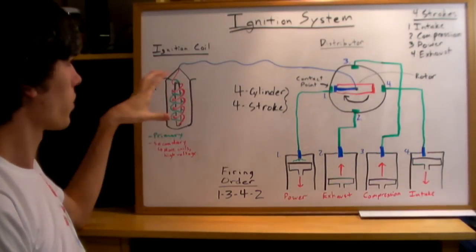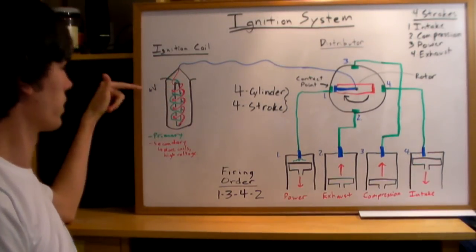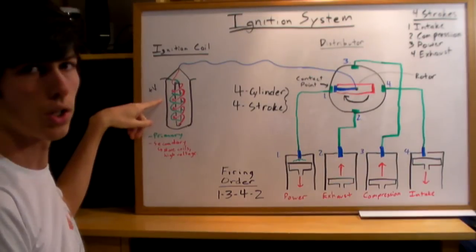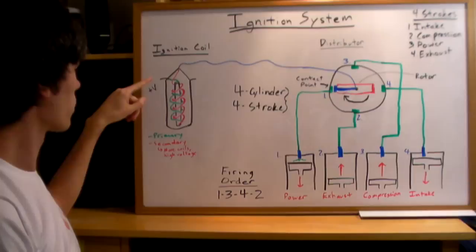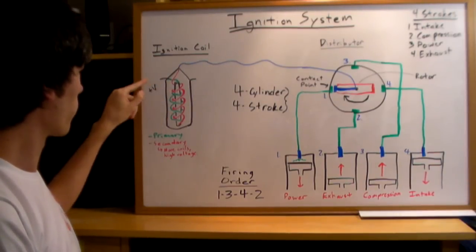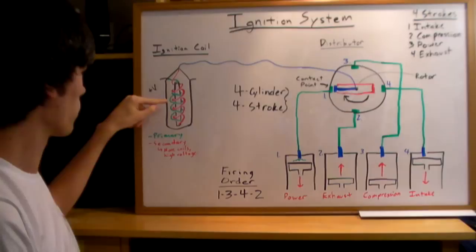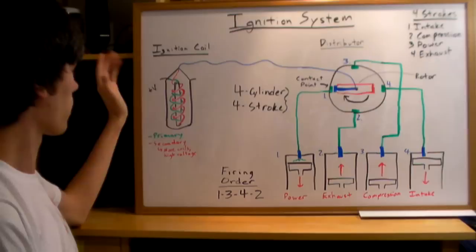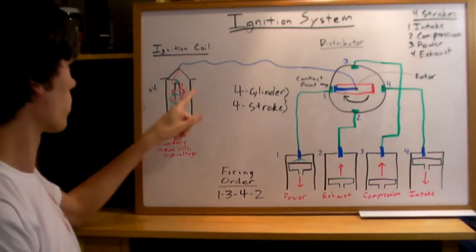To start off the ignition system, you're going to have your battery which is going to send a voltage to your ignition coil. Your ignition coil is just a system of two coils and you have a primary coil which is taking in the voltage.